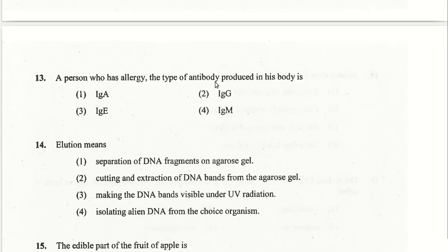A person with allergy produces the antibody type IgE. Elution means the cutting and extraction of DNA bands from an agarose gel. The second option is the answer for question 14.